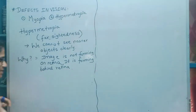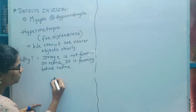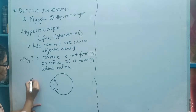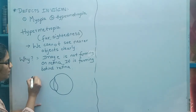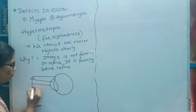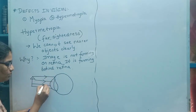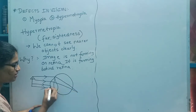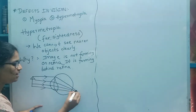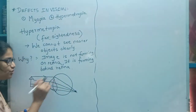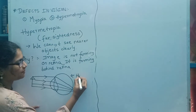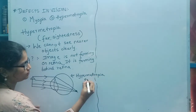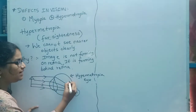Let us take an eye. This is the cornea and this is a lens. An object is placed near to the eye. The light rays passing from the object have to meet at a point on the retina. But here, the converging rays are not meeting on the retina — they are meeting behind the retina. So this is a hypermetropia eye, where image formation is taking place behind the retina.